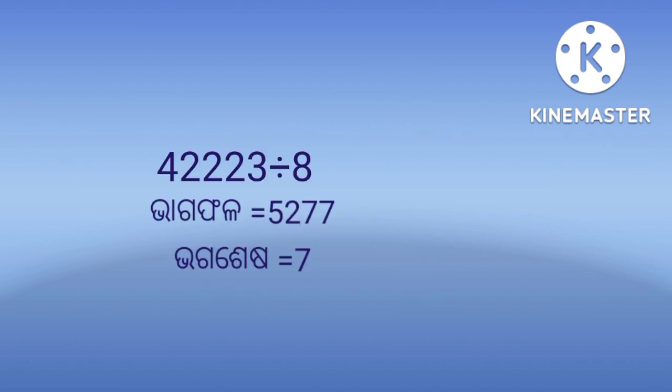How do we find this answer? Look, when we divide 42223 by 8, the quotient is 5277 and the remainder is 7. So what do we do? We subtract the remainder 7 from 8 to get our answer. That number added to 42223 will make it divisible by 8.